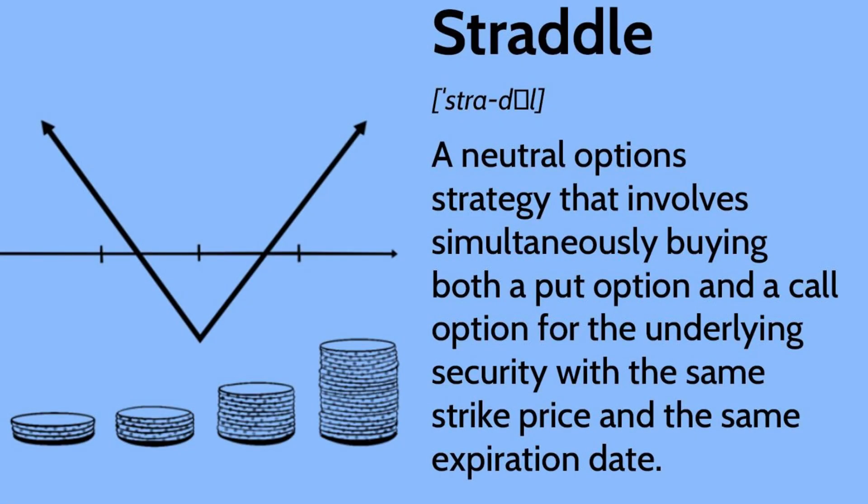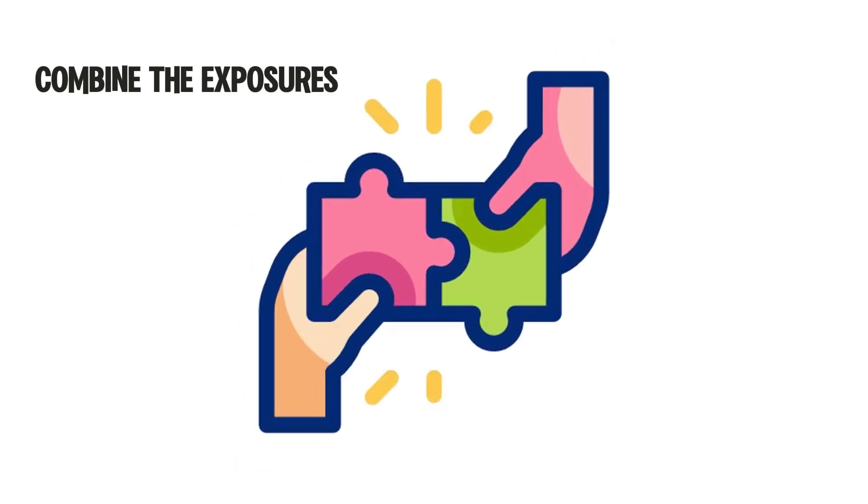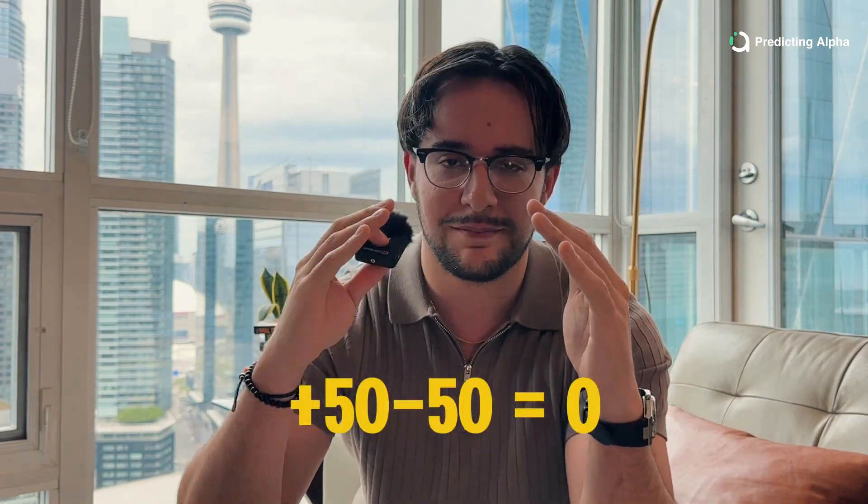So this is where trade structures such as a straddle come into play, where you are selling the at-the-money strike — the 50 delta put and the 50 delta call at the same time. If that at-the-money call was giving you minus 50 delta, and the at-the-money put was giving you plus 50 delta when you sold it, combining them gives you a net delta of zero. So when we put on a straddle at the inception of the trade, we would have a net delta exposure of zero — a delta neutral trade.